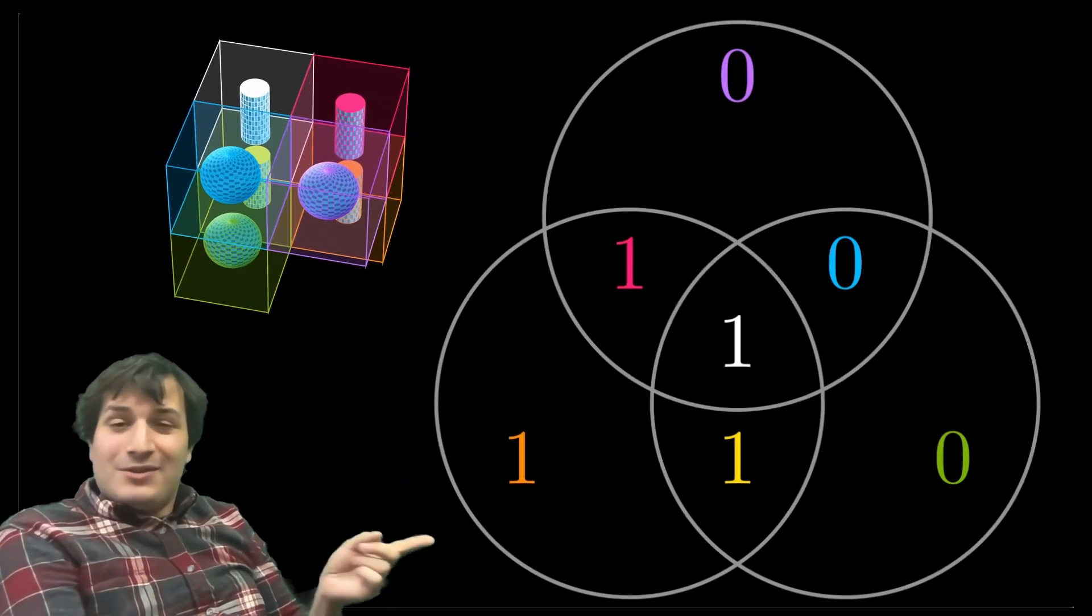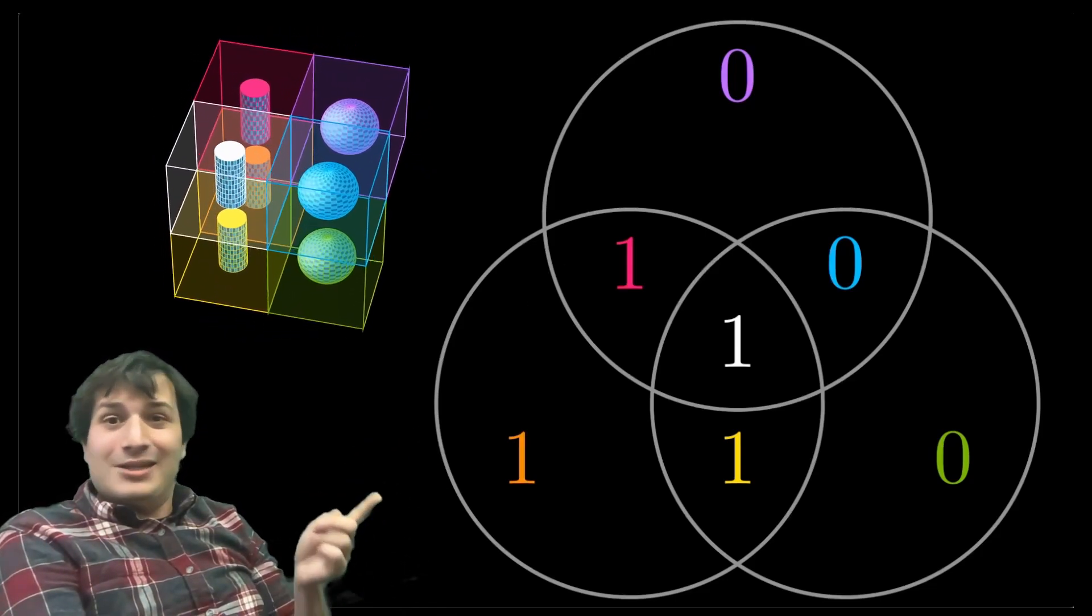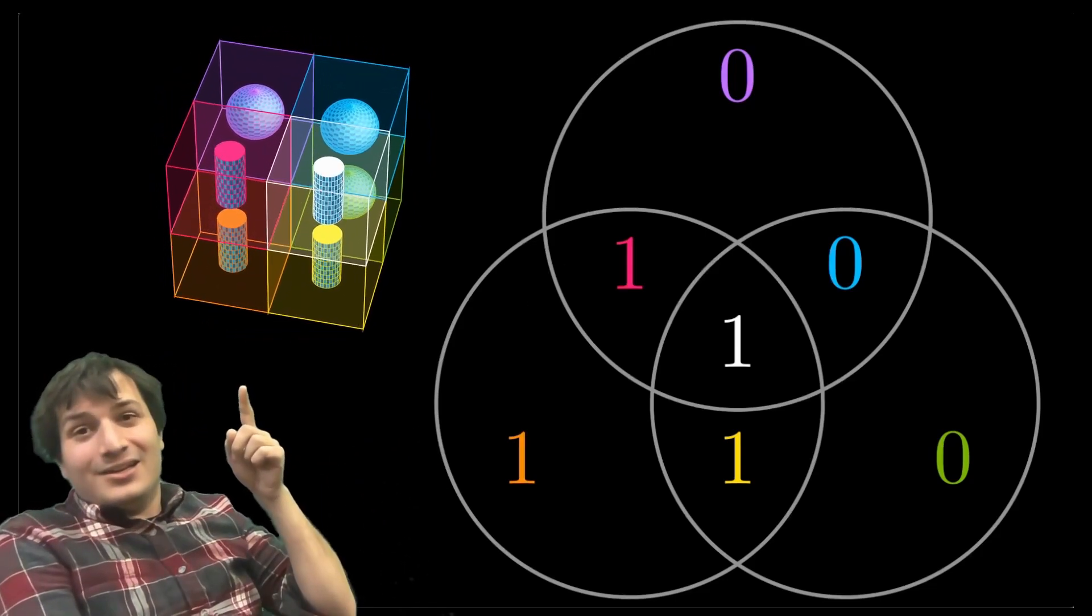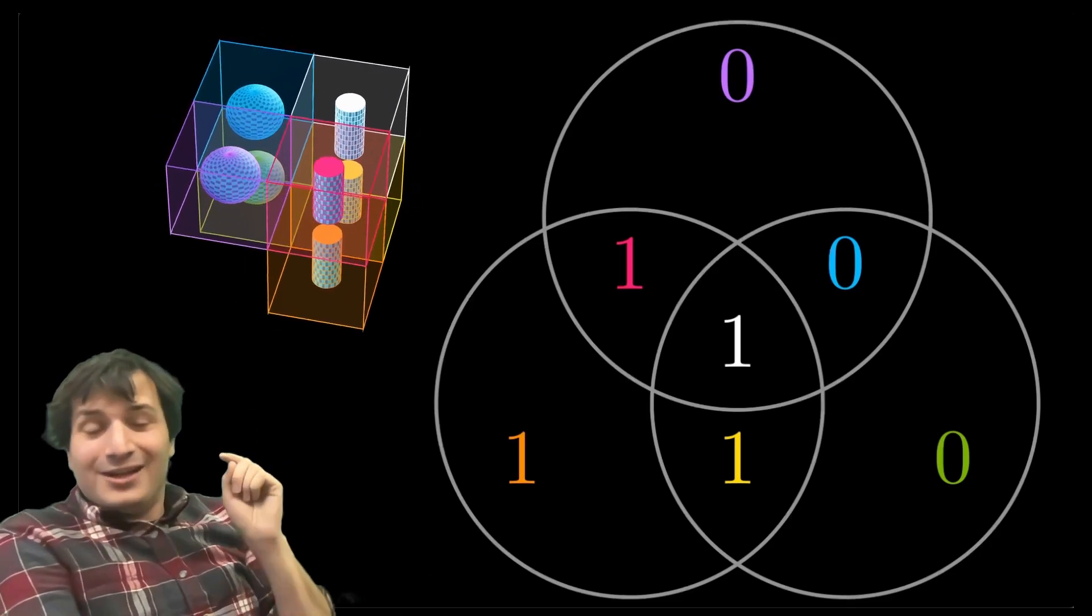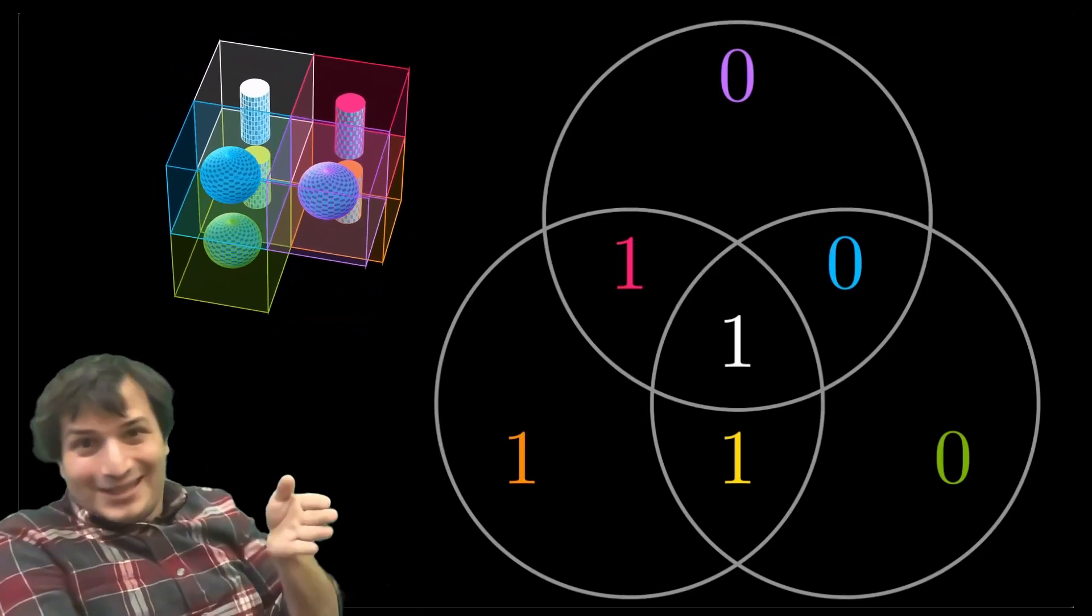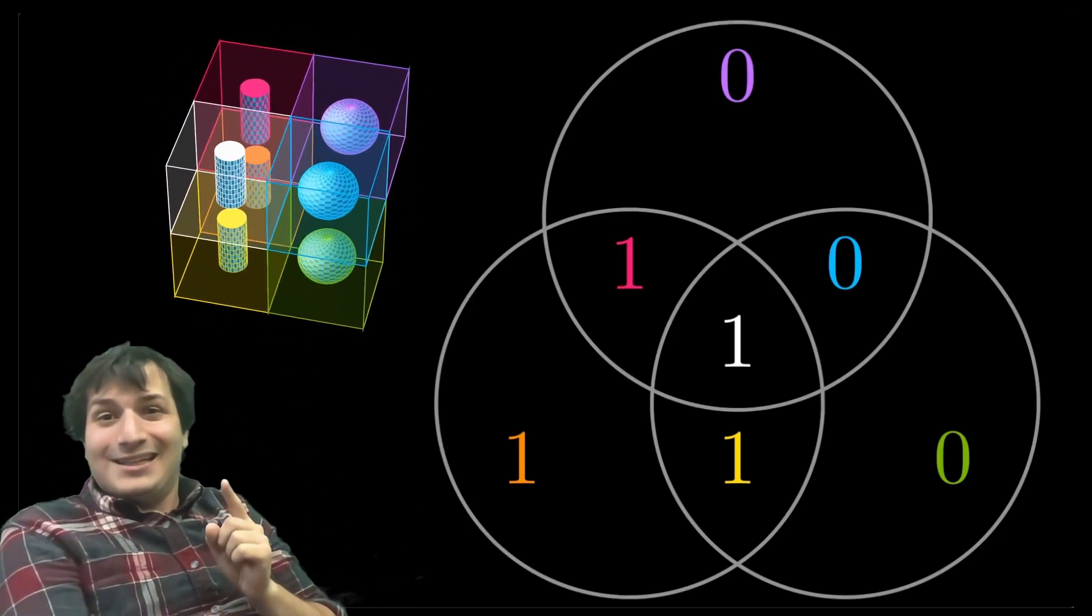And the rule that the sum of the digits in every circle has to equal an even number is just saying that the sum of the digits in every hemisphere of this cube, a hemisphere being just cut it in half, must be an even number.